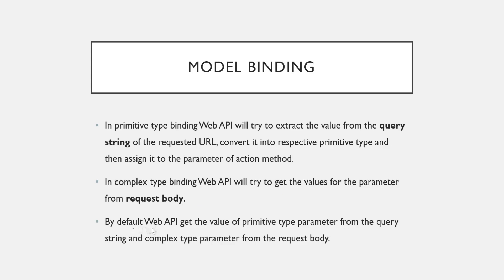By default, Web API gets the values of primitive type parameters from the query string and complex type parameters from the request body. But suppose you want to alter this — say you want to send complex type data through the query string, or send a primitive type via the request body. In that case, ASP.NET Web API provides two options to handle this.